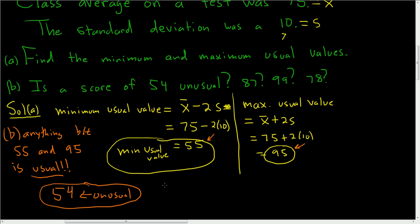What about 87? Well, 87 is between 55 and 95, so 87 would be not unusual. 87 is not unusual because it's between 55 and 95.